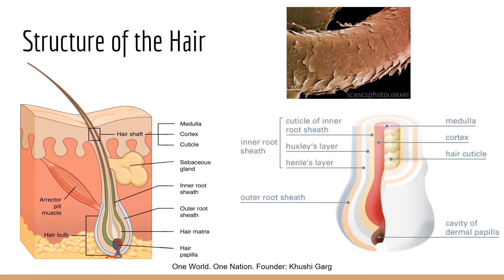There are many layers associated with the hair. The innermost layer is called the medulla, and it is present in the actual hair — not just the surrounding layers in the dermis. This layer is sometimes not even present in light-haired people. The layer surrounding the medulla is called the cortex, which is where most of the pigment of the hair is found.